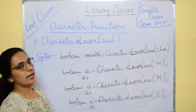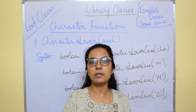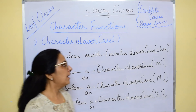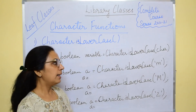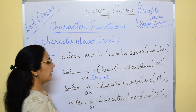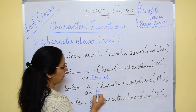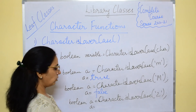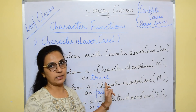The next function is Character.isLowerCase(), which is the reverse of the isUpperCase() function. This function checks if the given argument is a small letter — if yes, the answer is true; otherwise in all remaining cases the answer is false. For example, Character.isLowerCase('m') — m is written in small letters — so the answer is true. Character.isLowerCase('M') — capital M — returns false. And Character.isLowerCase('2') returns false again because 2 is a digit. So this will check only for the small letter.